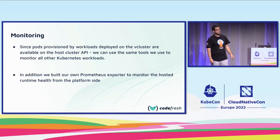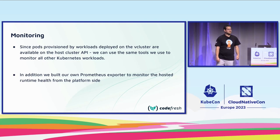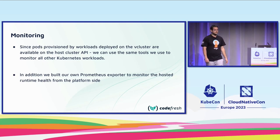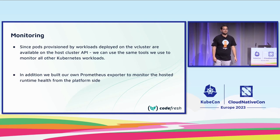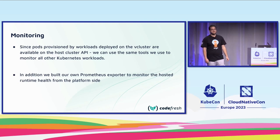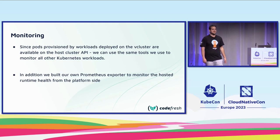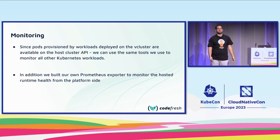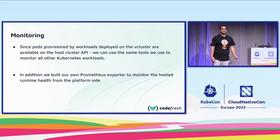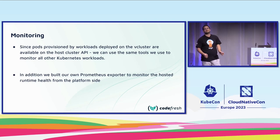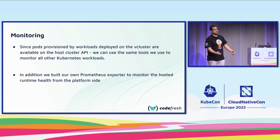How do we monitor all this? Because pods provisioned by vClusters are available on the host cluster, you can use your favorite tools to manage Kubernetes workloads. We use the Prometheus and Grafana stacks — everything is scrapable via the /metrics endpoints, and we get all the metrics as if everything were running without vClusters. In addition, we built our own proprietary exporter to monitor runtime health from the platform side, tracking business metrics like sync status and count.